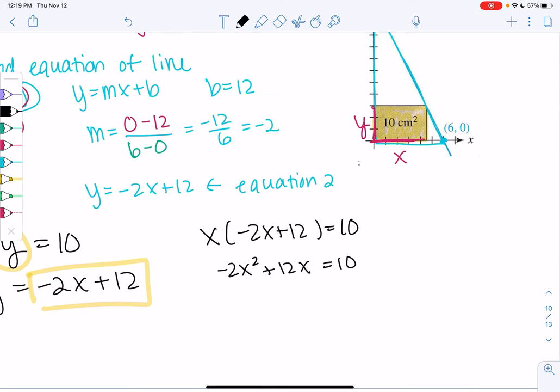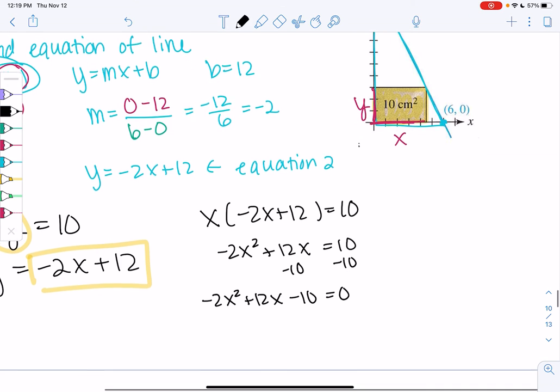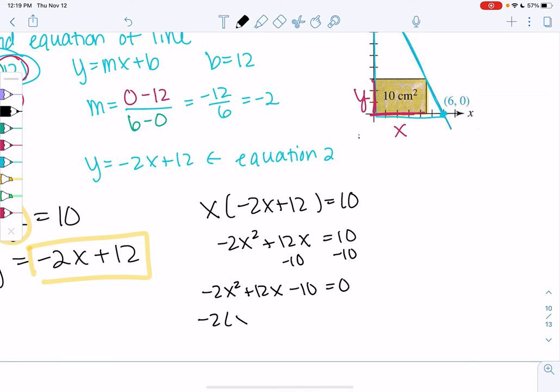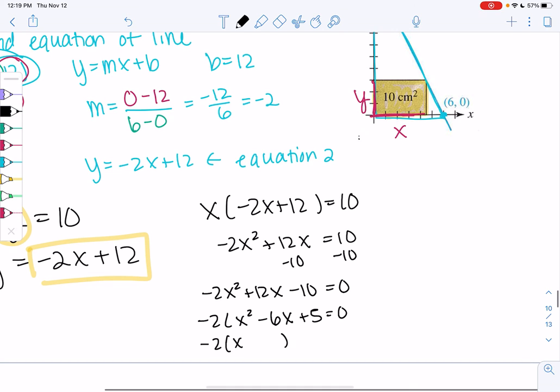And it looks like we have a quadratic. So let's subtract 10 and then factor negative 2x squared plus 12x minus 10 equals 0. I'm going to go ahead and factor out negative 2. x squared minus 6x plus 5. And then we'll factor that one more time.